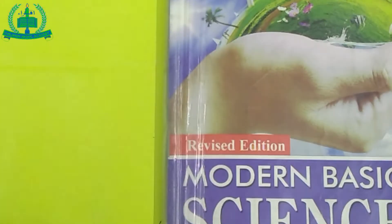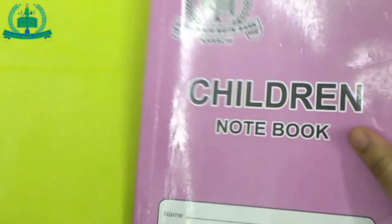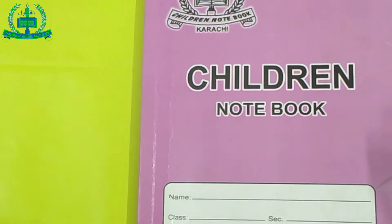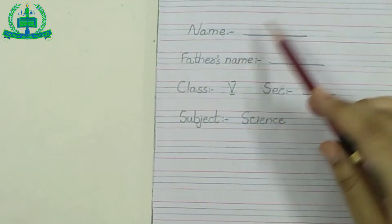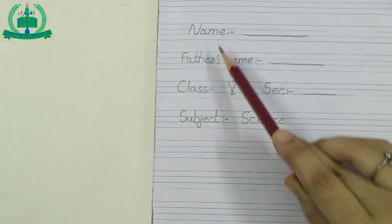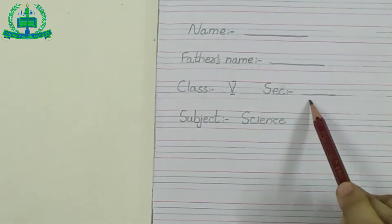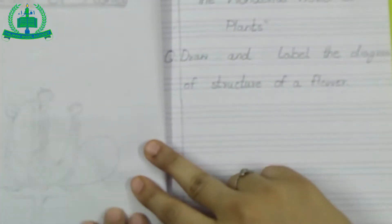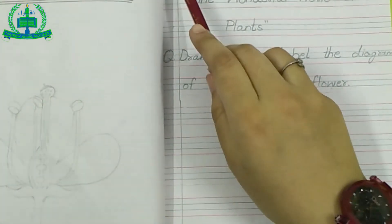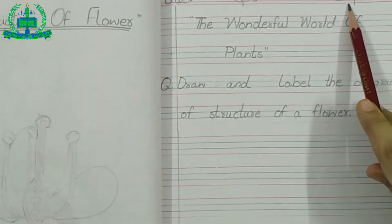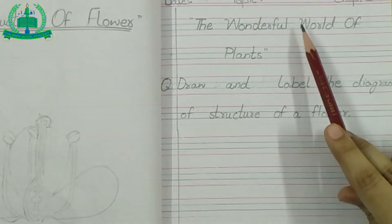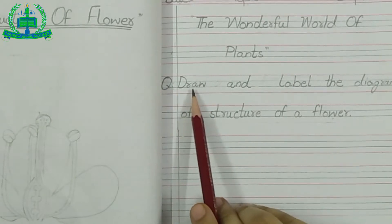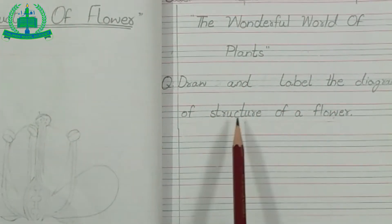Close your book. Now let me explain your home assignment. You have one interleaved science copy. Please cover your copy with a plastic sheet. Then maintain the first part of the copy with name, father's name, class, section, and subject name. Then open a new page. Mention the date and topic name: chapter number 1, The Wonderful World of Plants. Draw a margin line. Write the question: Draw and label the diagram of the structure of a flower.